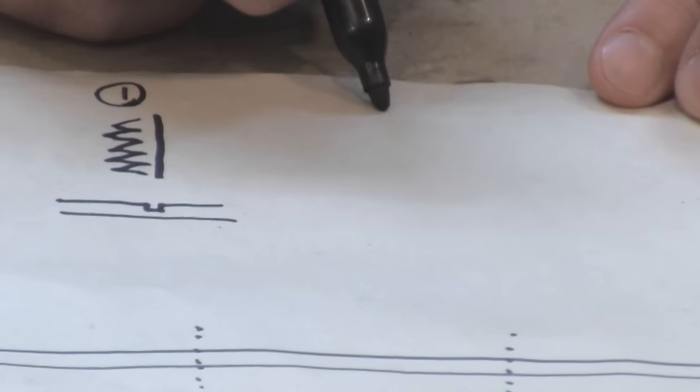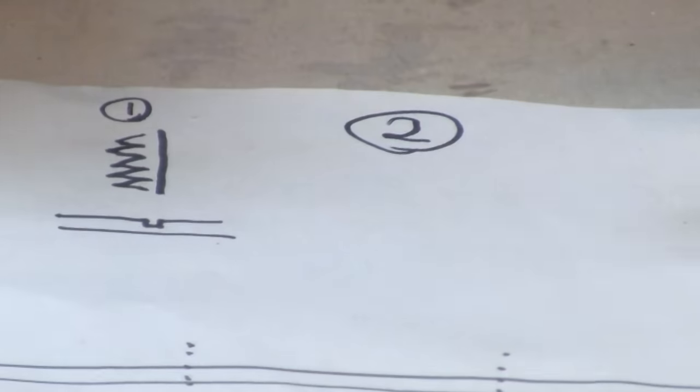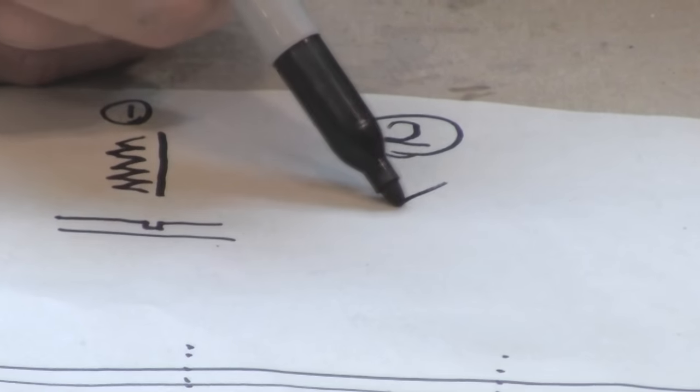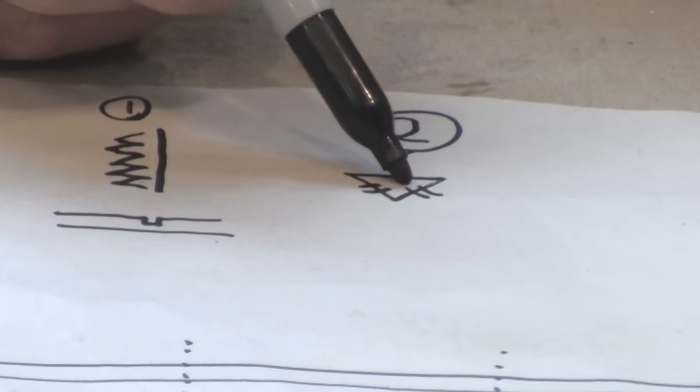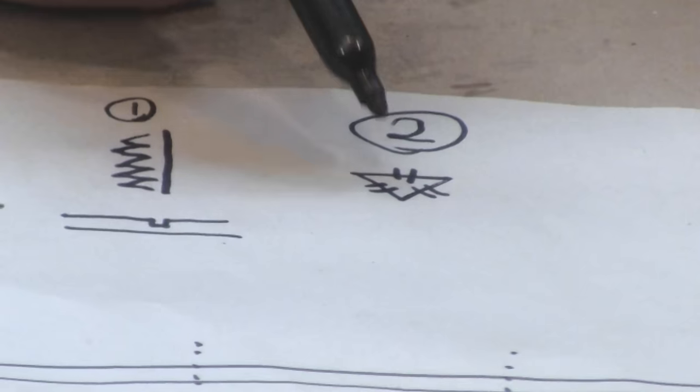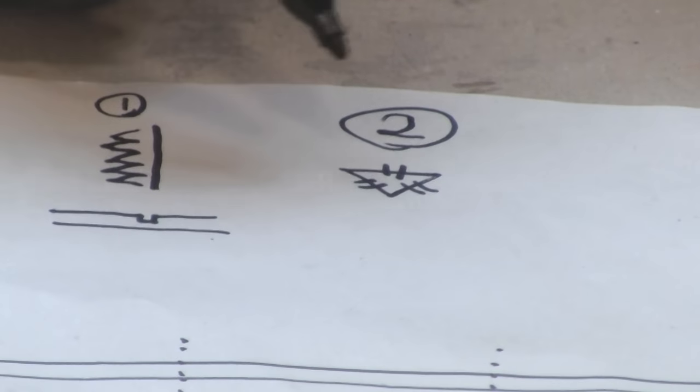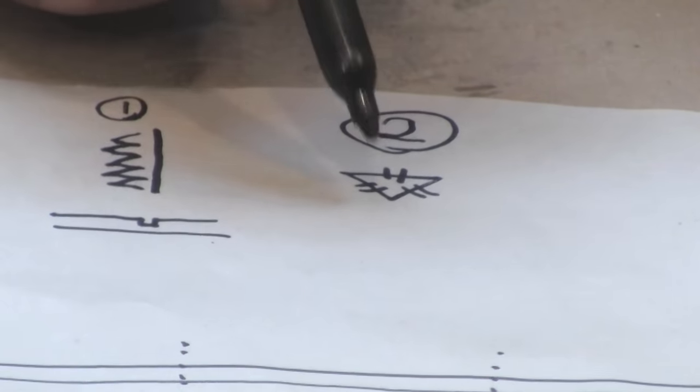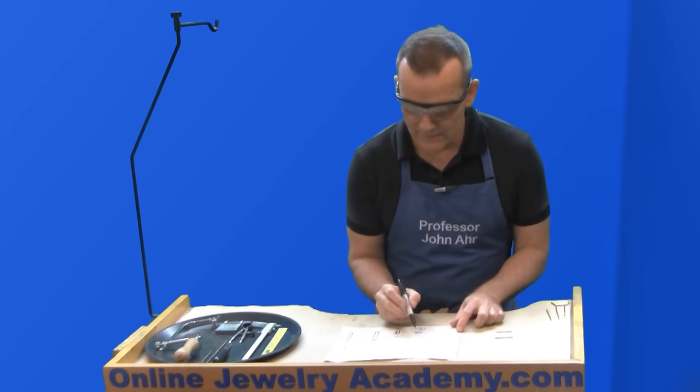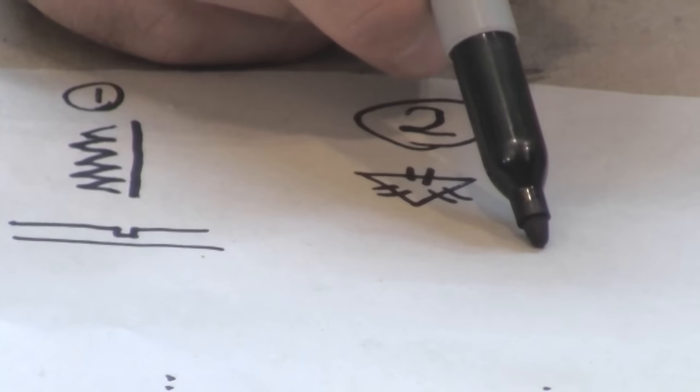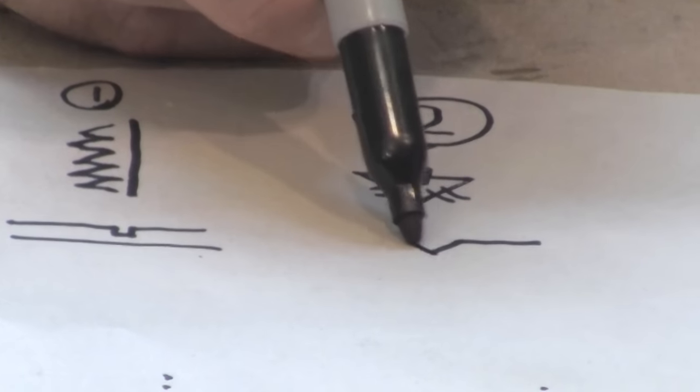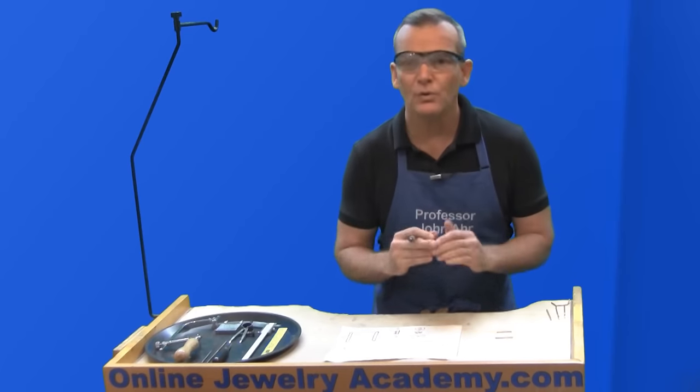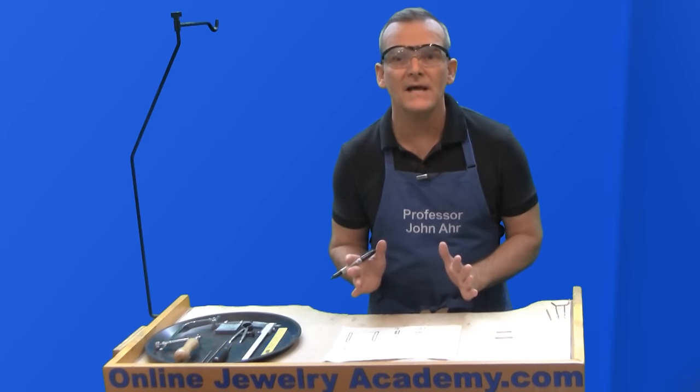Step number two is going to involve using a triangle file on point. And when you see in the diagrams, these little hatch lines, that just tells you where there are teeth on the file. But this file, which is a 60 degree angle, it's going to be used just to make a wider notch. We're just removing material in the second step.